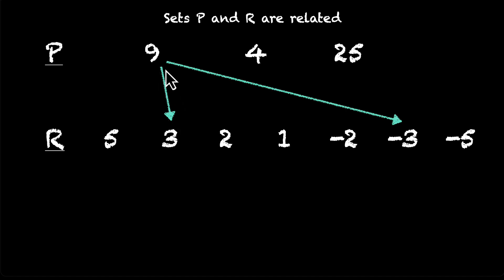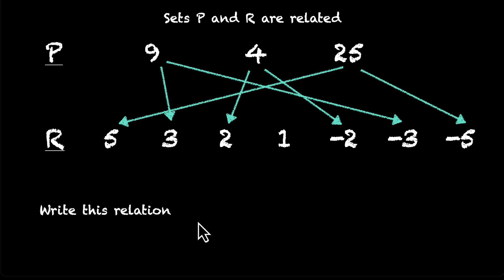9 is related to 3 and minus 3. 4 has 2 and minus 2, and 25 has 5 and minus 5. This is what we know. What do we need to find? We need to write this relation in roster form and also in set builder form. And we need to find its domain and range. Pause the video. Try this on your own.